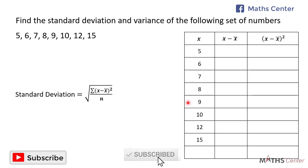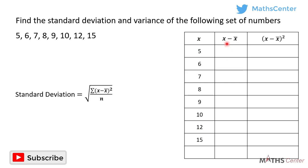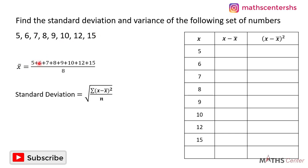I'll draw a three-column table with x values in the first column, x minus the mean of x in the second column, and x minus the mean of x squared in the third column. To find the mean, we add all the numbers and divide by 8: 5 plus 6 plus 7 plus 8 plus 9 plus 10 plus 12 plus 15 divided by 8 is 9. So the mean is 9.